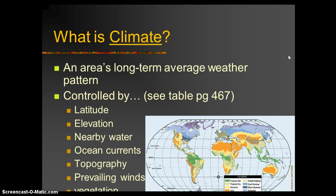So what controls climate? If you were to take a flight and land anywhere on the planet, you would have to pack accordingly to the climate you're landing in. Climate usually involves average temperature and the average amount of rainfall. There are other things, but those are the two main descriptors of climate.